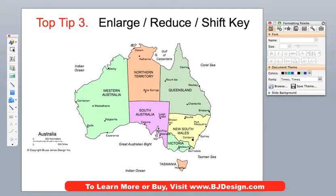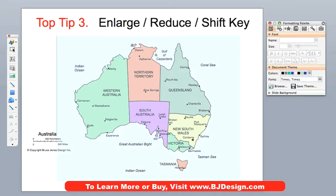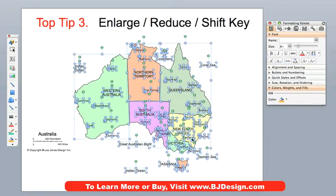Here we have a map of Australia, and a very common thing that people want to do is either make the map larger or smaller. A very simple way to do that is to select all the elements that make up this map. We'll do it by taking our mouse button, holding it down and just dragging. See the little blue dotted lines — everything inside that blue area will be selected.